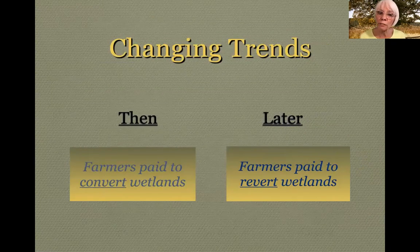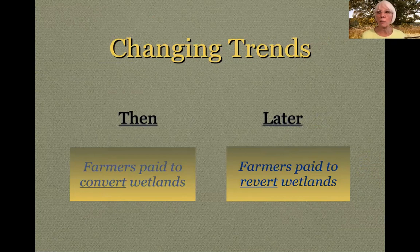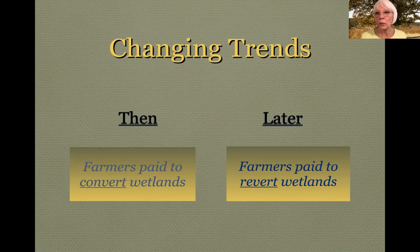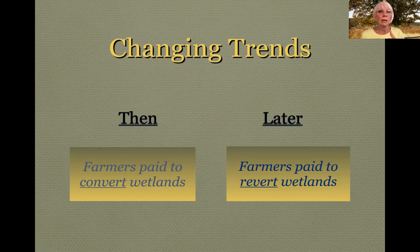There was a time when farmers were paid to convert wetlands into farmland; then they were paid in the Obama era to revert them back to wetlands. Different farm bills expired and new ones were made. Then we came into the era of mitigation banks — a complicated process of replacing wetlands. Things were improved in the Obama era, but at this point in time some of those rollbacks have been made. Time will tell.